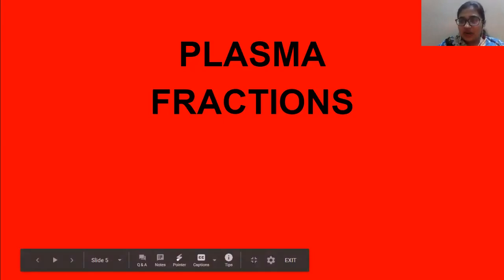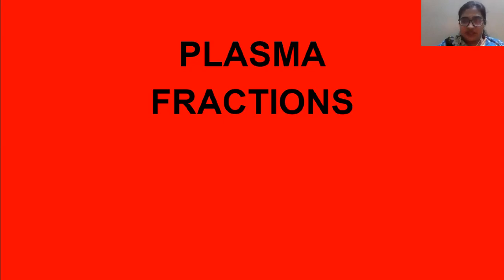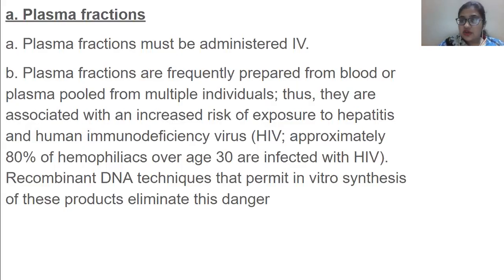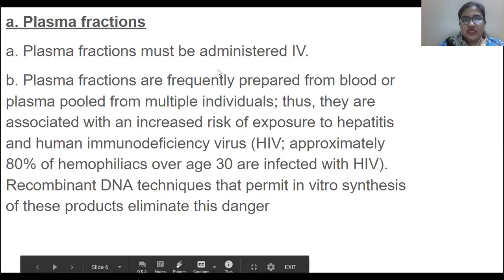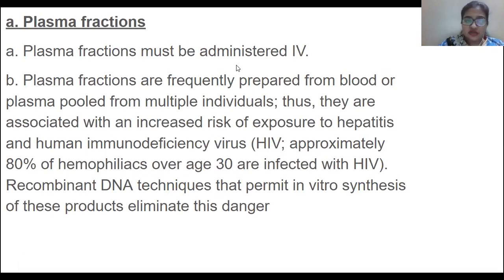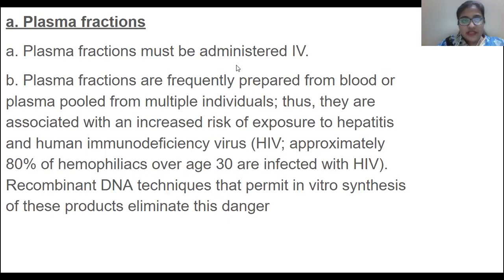The next thing that can replenish our body is plasma fractions, in the context of anemia — how exactly our body can help maintain normal levels. Plasma fractions must be administered IV. A plasma fraction is when you take someone's blood, extract the plasma, and inject it into another person's body.